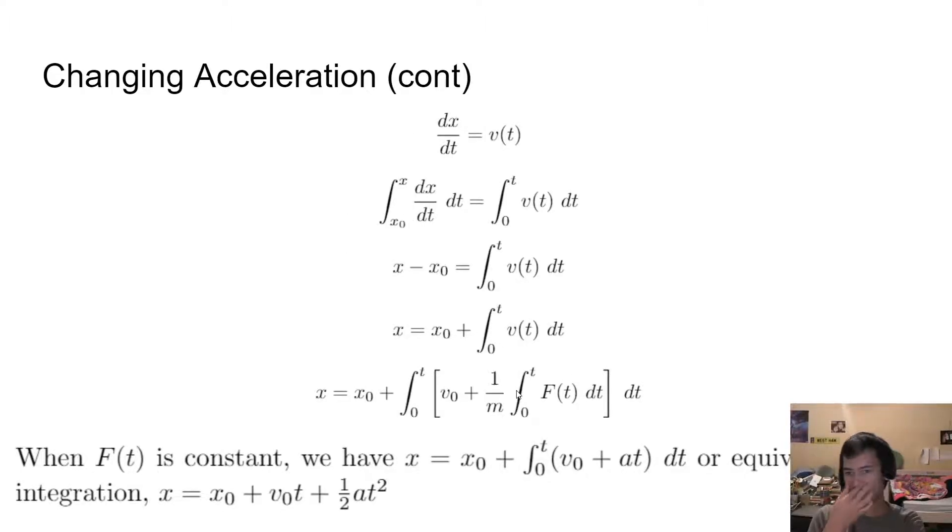Now, looking at changing acceleration a bit more, we're going to see if we can find another kinematic equation for changing acceleration with position. So we start off with dx by dt equals V of t. Our derivative of position is just velocity. Taking the integral of both sides, on the left, we do our integral from x0 to x because we want to see how x is changing over time. On the right, we have 0 to t because we want to see what V is doing between the time it starts and the time it ends.